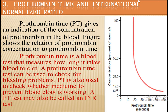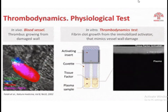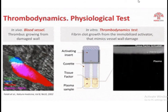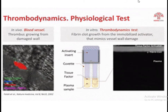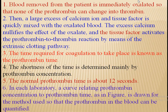For the prothrombin time, it gives an indication for the concentration of prothrombin in the blood. Blood removed from the patient is immediately anticoagulated so that none of the prothrombin can change into thrombin. Then a large excess of calcium ion and tissue factor is quickly mixed with the oxalated blood. You will perform all these tests in the practical class yourself and check your bleeding time, clotting time, and prothrombin time.